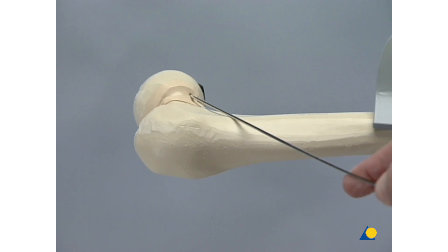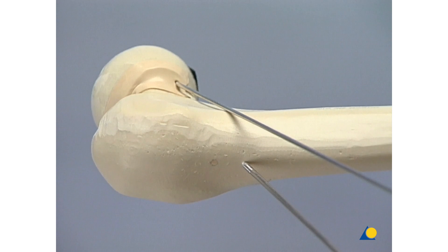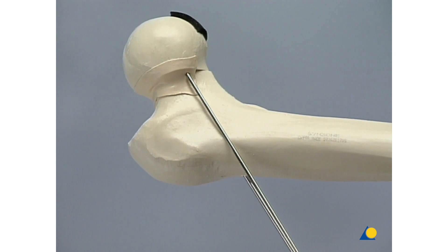The first 2.8 millimeter guide wire is introduced parallel to the orientation wire and its position is checked under fluoroscopy. If the first wire in the head and neck is correctly positioned, the orientation wire may be removed.